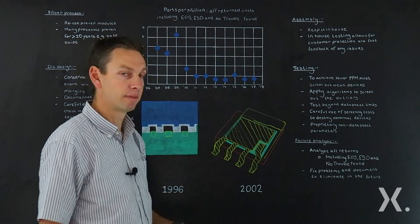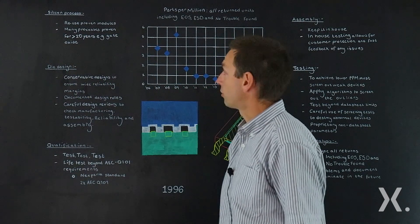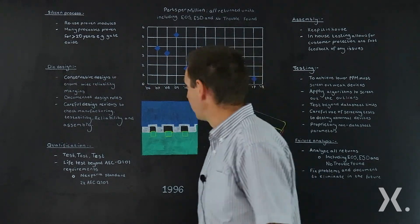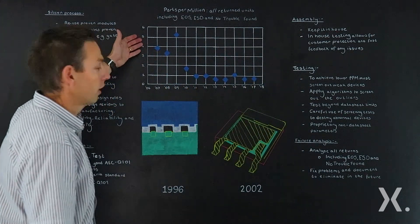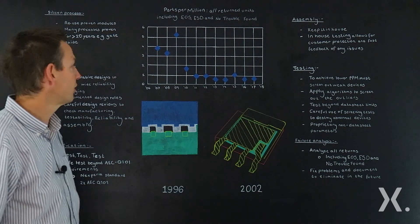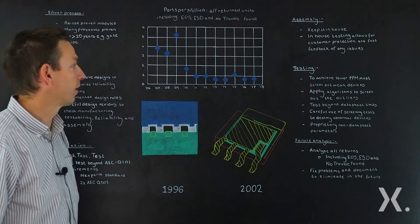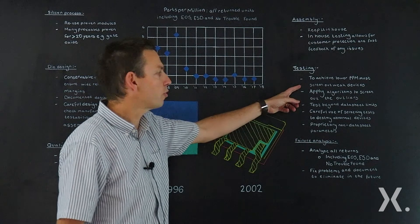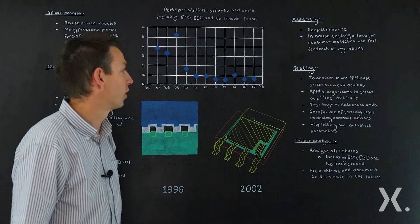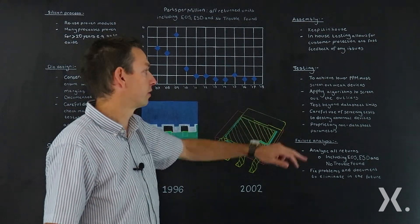So let's talk a bit more about testing. By using re-silicon processes, reusing those, having good design, and doing assembly in-house, that will probably achieve something like a high PPM level, four or five PPM. That's what we had for many years. But testing is also the critical issue to get from three or four PPM down to consistently below one PPM. There will always be some weak devices and testing is the way to screen out those weak devices and to get us below one part per million. We can use special algorithms to make sure we screen out those weak devices.